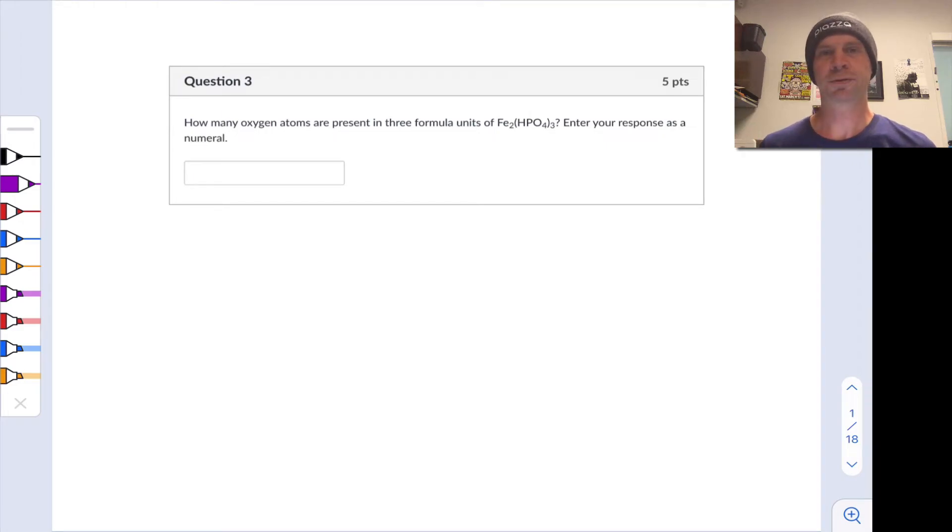Hi guys, in this video we're working through practice exam 1.2 in the fall 22 semester, which is actually the midterm exam from fall 21. I'm going to start with question 3, which gets us into chapter 2 content on atoms and the periodic table.